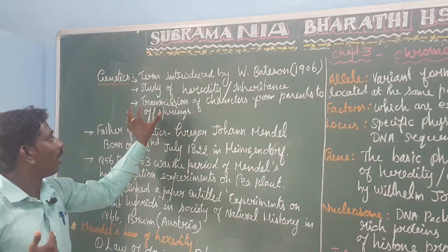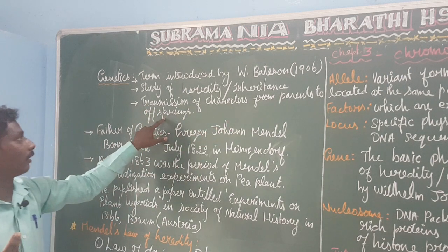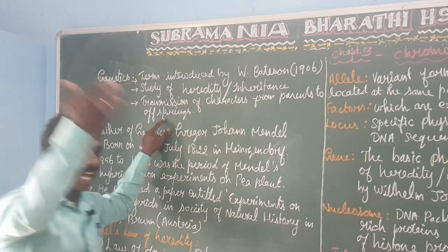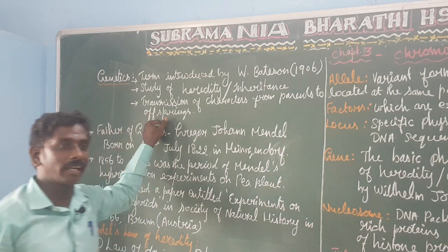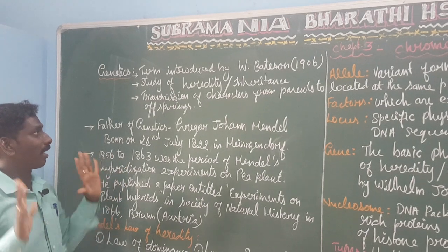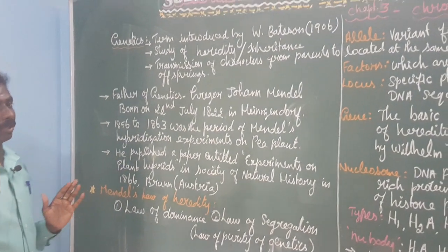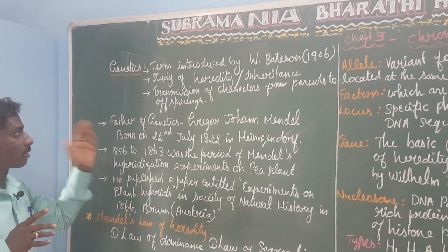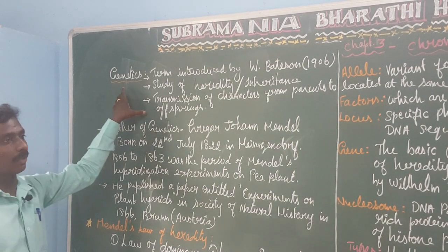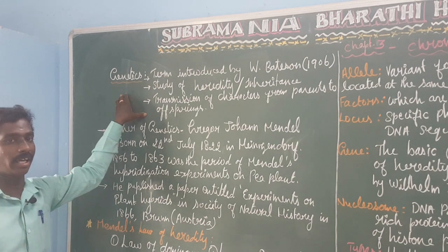These characters are transmitted from parents to offspring. That is the genetics — it is a hereditary unit, the transmission of characters from parents to offspring. In genetics we have two groups: classical genetics and modern genetics.